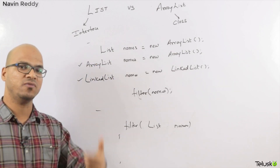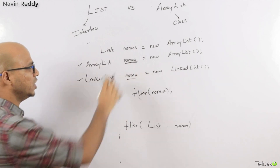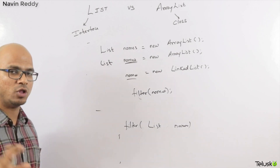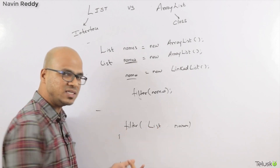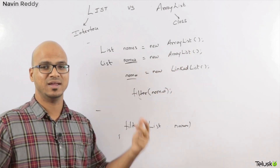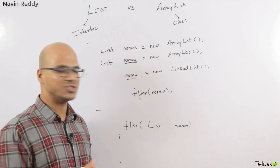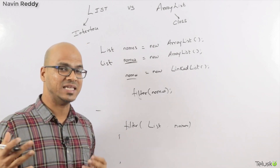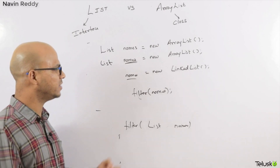So what we always do is: whenever you create a reference variable — we call them objects, but those are reference variables — it should be of the type of the interface. Instead of creating ArrayList or LinkedList references, we should always write List. Writing ArrayList or LinkedList will not give you an error, but if you follow the standards: the standard says we should always create a reference of the interface and the object of a class, so that you only need one method which can take all the implementing classes.